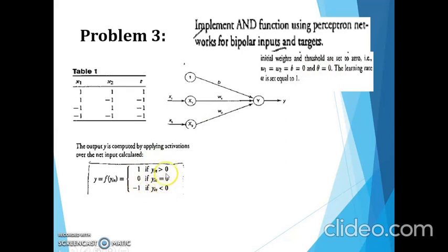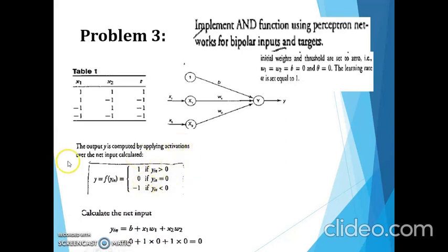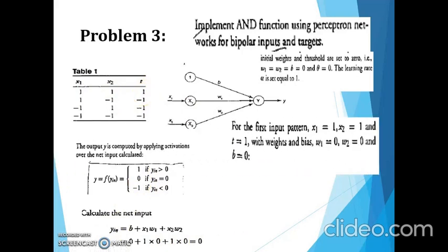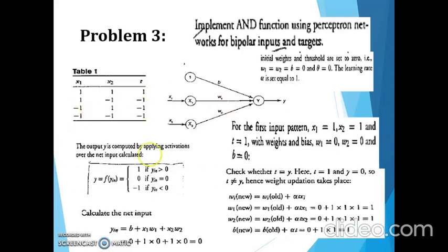First we calculate the net input. All weights initialized to 0. y_in for the first sample (1,1): 1·0 + 1·0 = 0. Applying the activation function gives output 0. But we are expecting target 1, so we have to update the weight. w1_new = w1_old + α·t·x1 = 0 + 1·1·1 = 1. w2_new = 1. Bias_new = 1. Now we have the updated weights: w1=1, w2=1, bias=1.